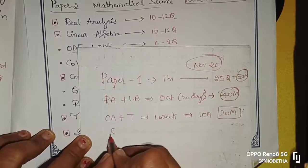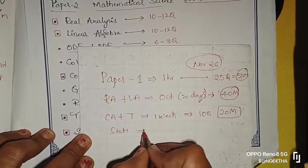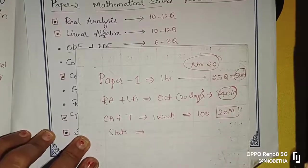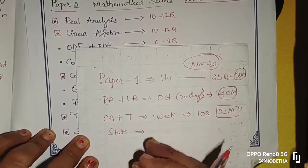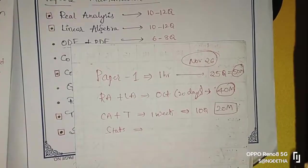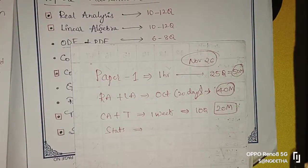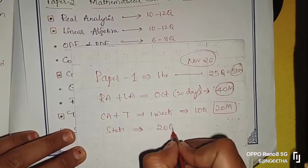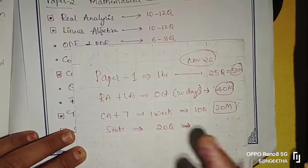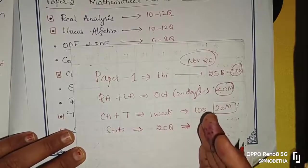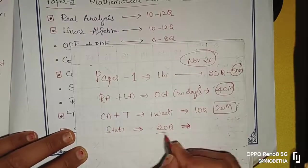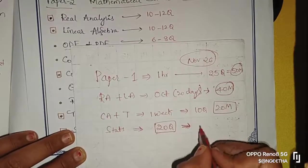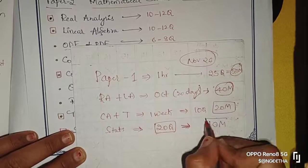Next coming to the stats portion. In the stats portion, you will try basics. You have 10 questions from that section. Some basic questions repeat every year. So you have to look at at least 20 questions from previous papers. You can also look at YouTube channels where teachers upload stats content.